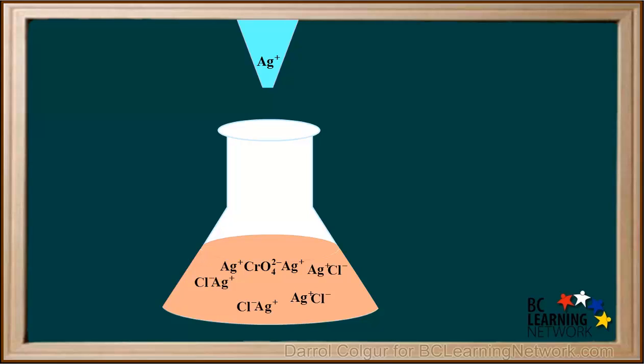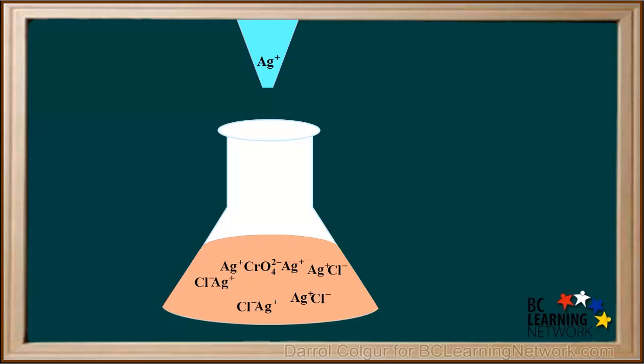There are no chloride ions available, so the silver will have to remain bonded with the chromate. We say the solution has turned a slight permanent reddish color. This is what is called the endpoint of the titration. A permanent color change of the indicator signals the endpoint of a titration.